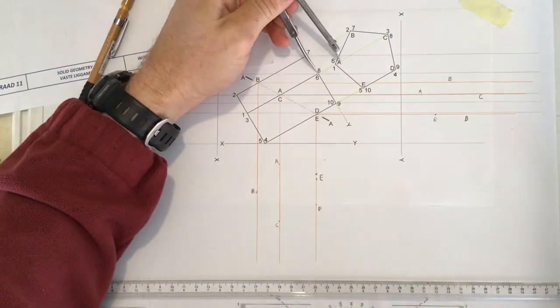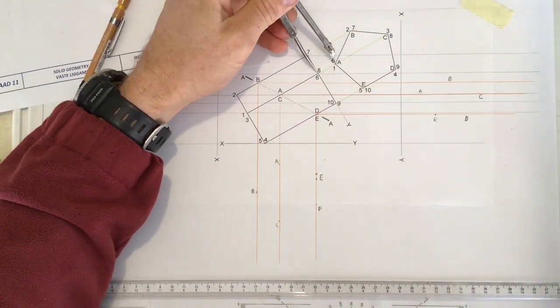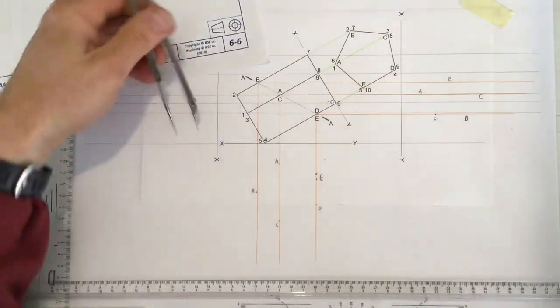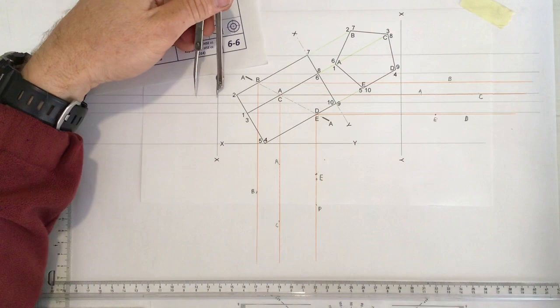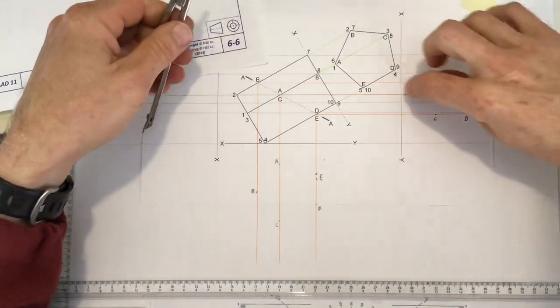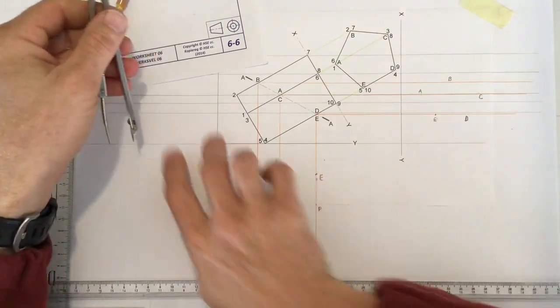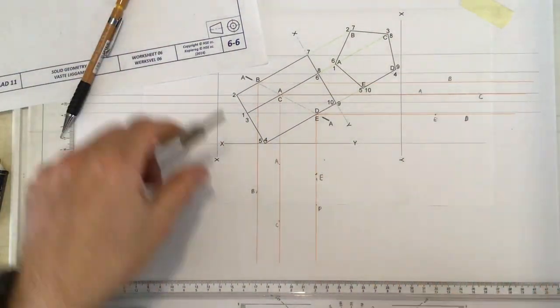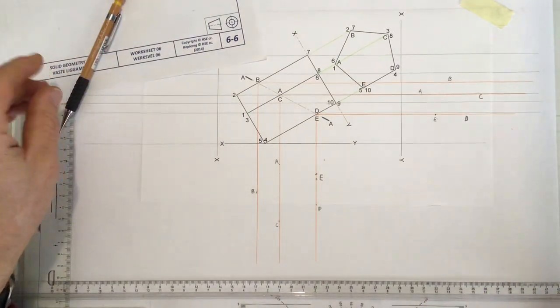Note this: any measurement over here will be the same as any measurement over there or there. Or if I had it in this view, I could take it across to there. These measurements over here from the XY axis to the points are going to be exactly the same in those views over there. And when we come down to doing what they call the true shape of the cutting plane.